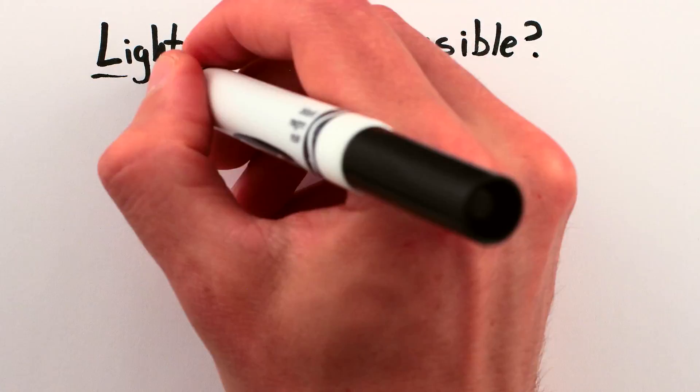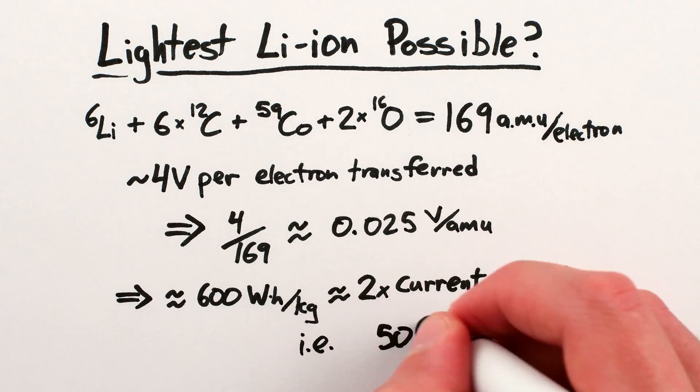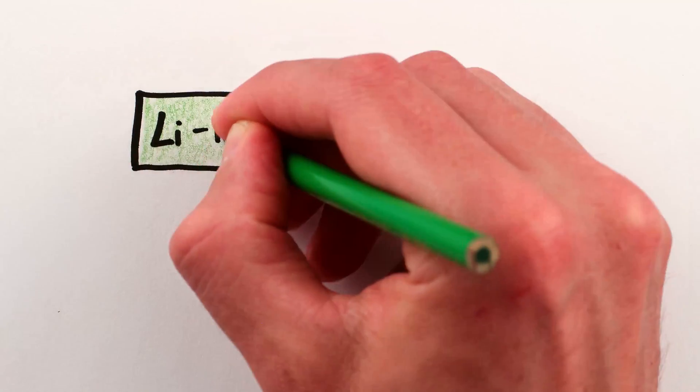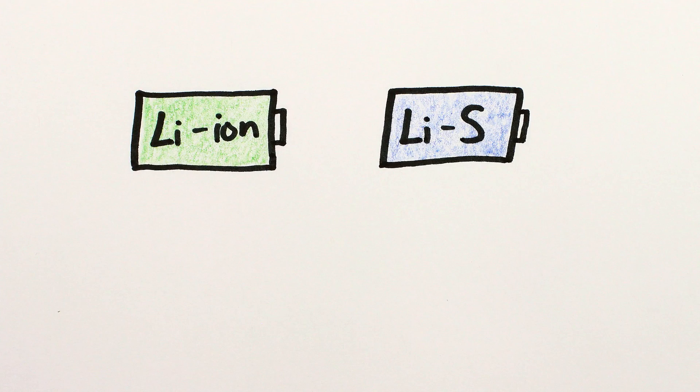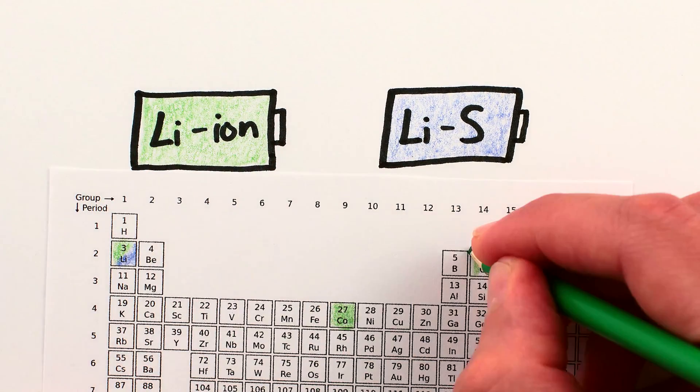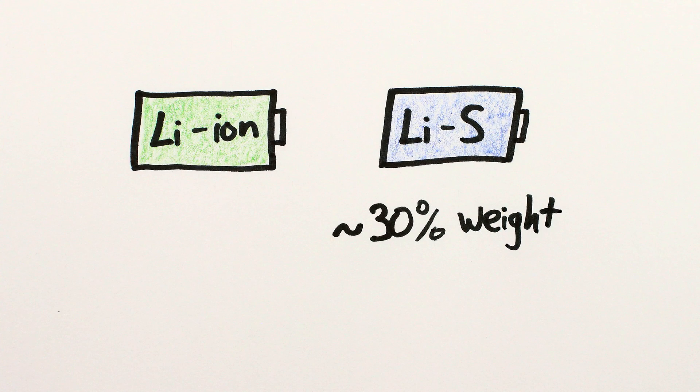So how much lighter will batteries get? Theoretical calculations put the minimum possible weight for lithium-ion batteries at around half what they currently are. A lighter candidate currently being developed is the lithium-sulfur battery, which has less energy per electron than lithium-ion batteries, but lithium and sulfur are lighter than lithium and cobalt oxygen and carbon, so a battery with equivalent capacity can in principle weigh around a third as much.